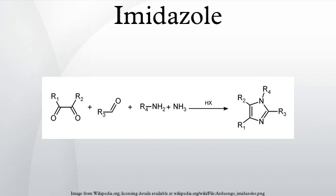Formation of four bonds: this is a general method that is able to give good yields for substituted imidazoles. In essence, it is an adaptation of the Debus method called the Debus-Radziszewski imidazole synthesis. The starting materials are substituted glyoxal, aldehyde, amine, and ammonia or an ammonium salt.